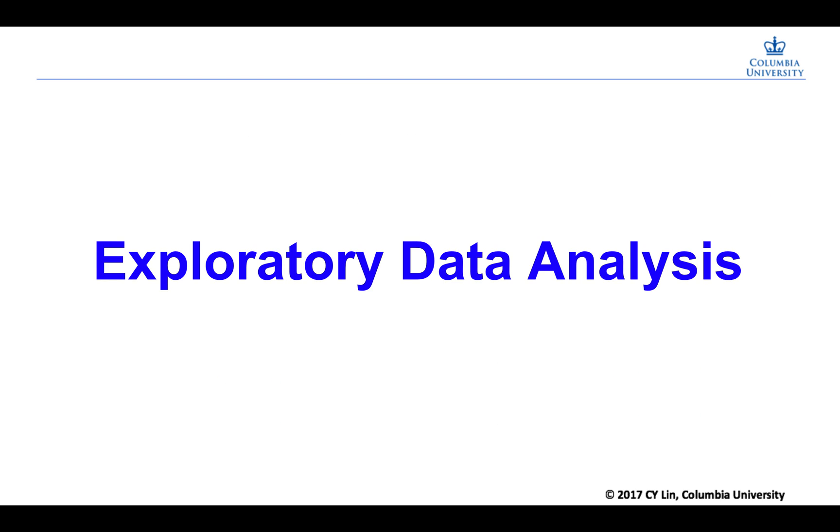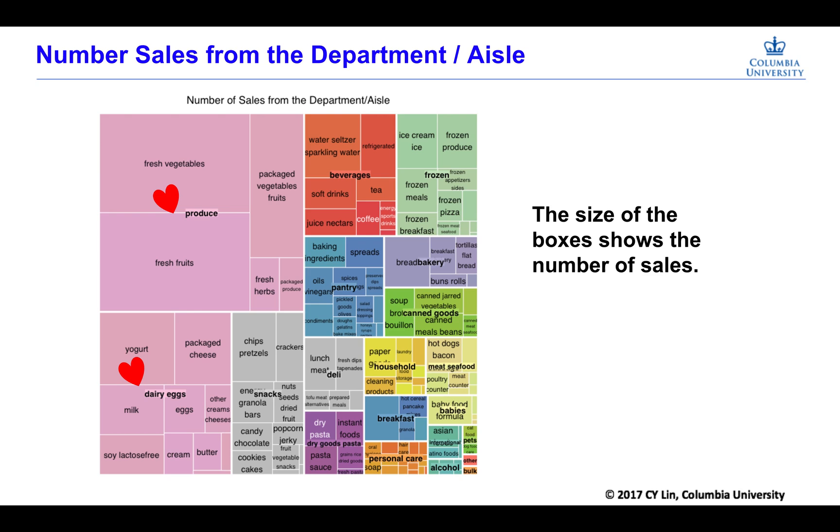We first did an exploratory data analysis. Here's a graph about number of sales from departments per aisle. The size of box shows the number of sales. Produce, beverage, frozen are department names. Yogurt, packaged cheese, milk, these are aisle names. We can see, though the grocery provides this many different categories or products, the sales of produce and dairy department has some major contribution of the sales.